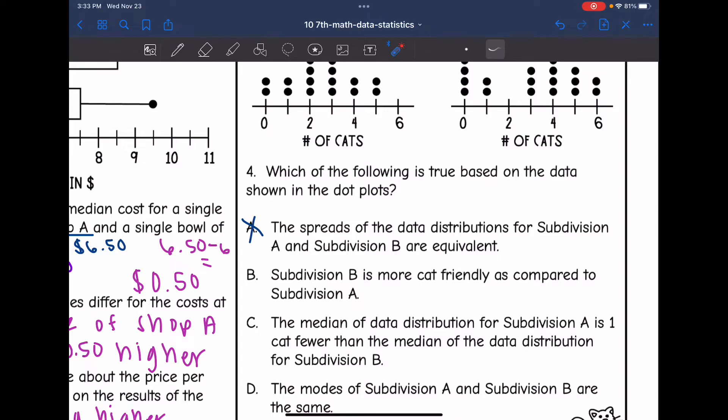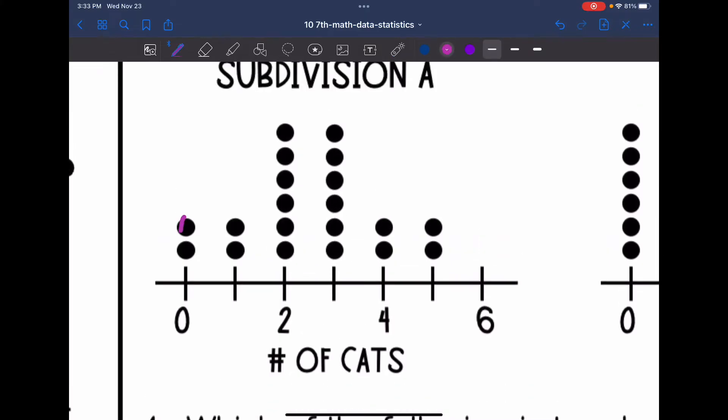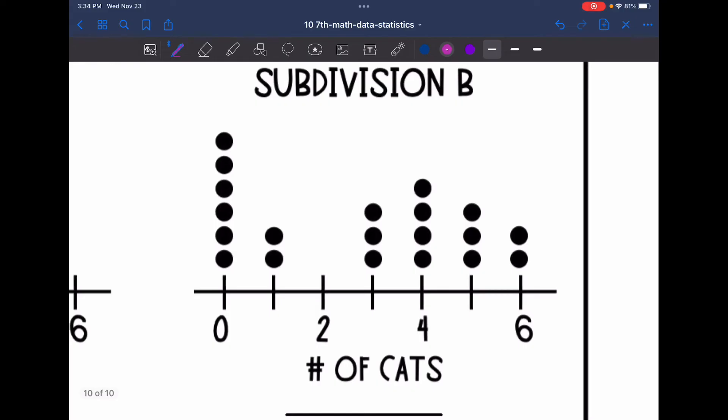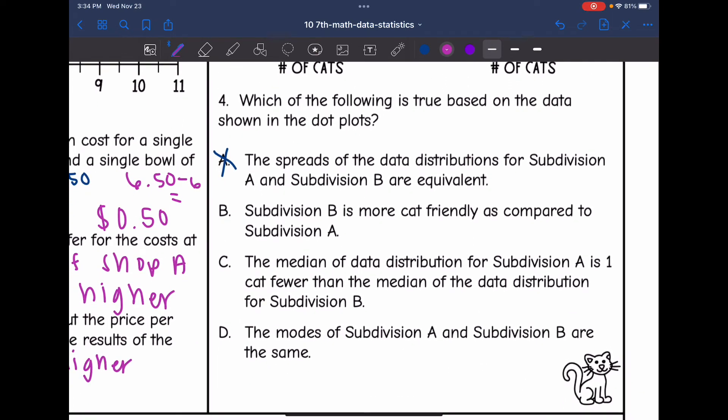Let's look at C. It says the median of data distribution for Subdivision A is one cat fewer than the median of the data distribution for Subdivision B. So let's find the median of both of these. I'm going to start with Subdivision A. It looks like I'm going to get between two and three, so 2.5 for my median here. And then let's look at this one. I'm going to get three for my median here. So I got 2.5 and 3. So it is not one whole cat fewer.